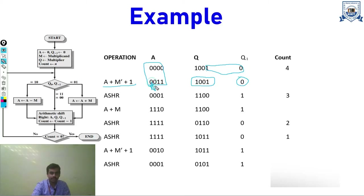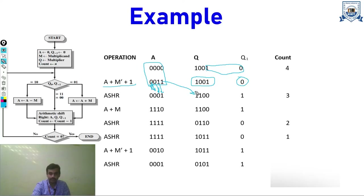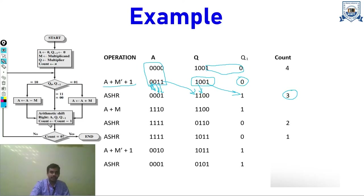After the arithmetic right shift, the bits shift accordingly and the last bit shifts into Q-minus-1. Count is decreased by 1, giving count = 3. Since count is not 0, we check Q0 and Q-minus-1 again. They are now 0-1, so we perform A plus M. A is now 0001 and M is 1101.